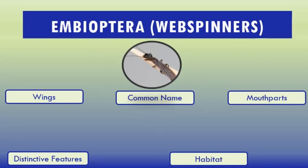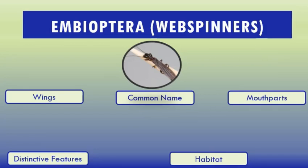The second order is Embioptera, covering the web spinners. The name comes from the Greek 'embios' meaning lively and 'pteron' meaning wings. The common name 'web spinners' comes from the insect's enlarged tarsi on their front legs, which produce multiple strands of silk. They use the silk to make web-like galleries in which they live. The order Embioptera, commonly known as web spinners or foot spinners, are a small group of mostly tropical and subtropical insects. More than 400 species in 11 families have been described, the oldest known fossils being from the mid-Jurassic.